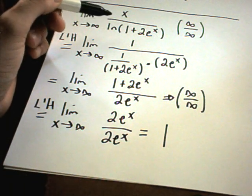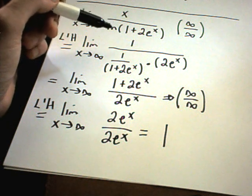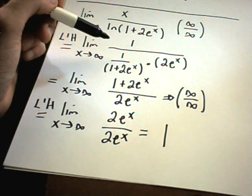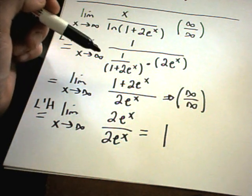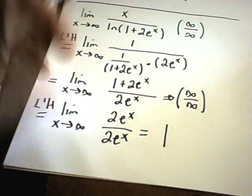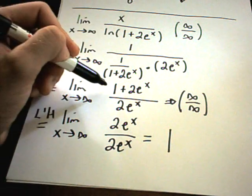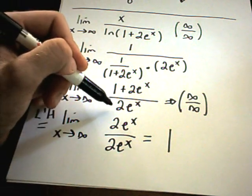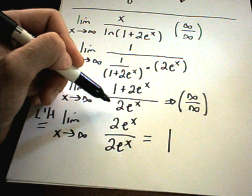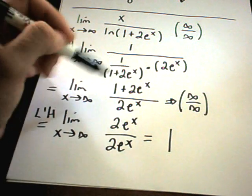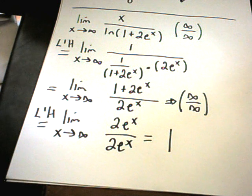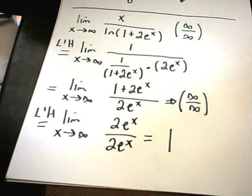So this is the basic idea: if you get 0/0 or infinity over infinity, start taking the derivative of the top and the derivative of the bottom, simplify things algebraically, and then repeat the process. If you're still getting 0/0 or infinity over infinity, keep using L'Hôpital's Rule until you no longer get that form.